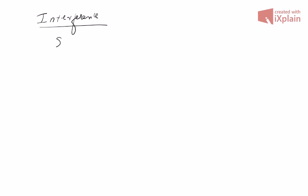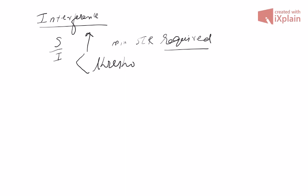Welcome to the next lecture on wireless communication. Today we will continue our discussion on interference — co-channel interference — and we will do an example. We want the signal-to-interference ratio to be as high as possible, so there will be some minimum signal-to-interference ratio required. Suppose the SIR is below some threshold; then there may be issues and we will not be able to detect the signal properly.